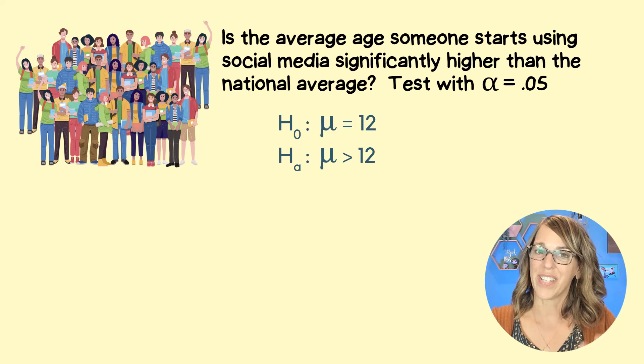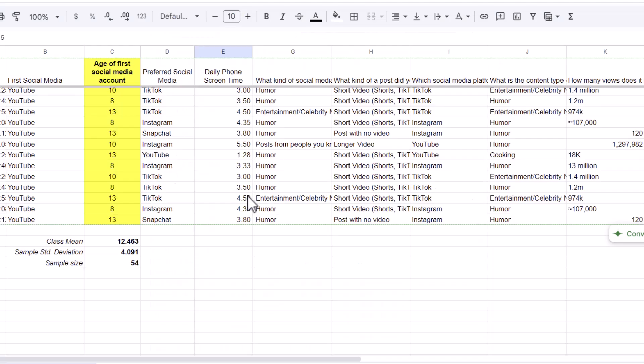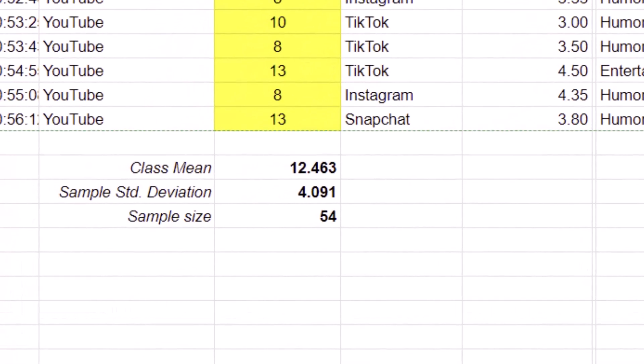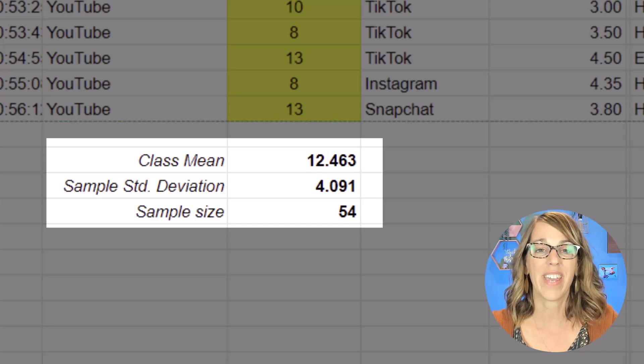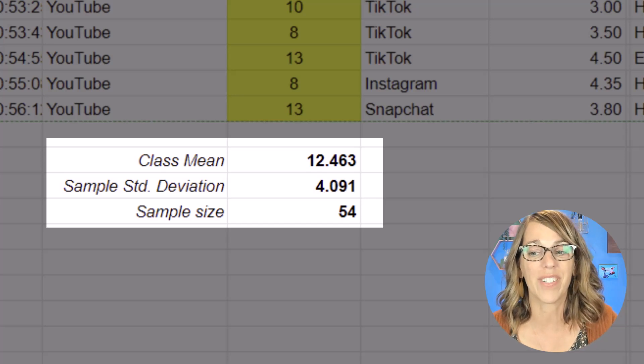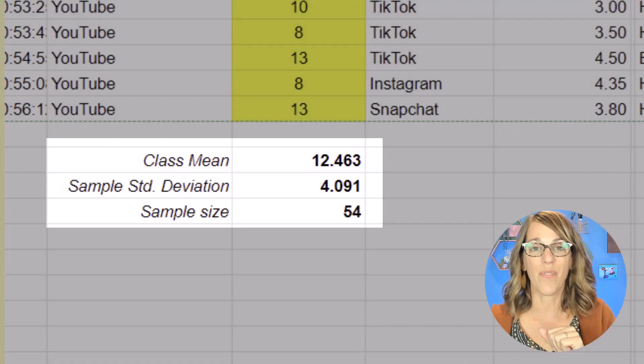Now we're also going to need our sample information. My students did a survey and came up with these results. So they found that the average was 12.463 in this group. We had a sample standard deviation of 4.091 and a sample size of 54.